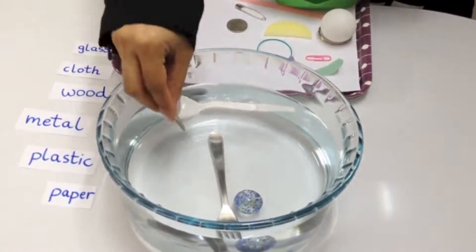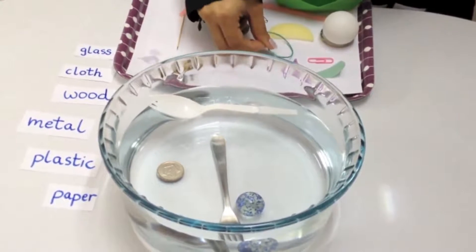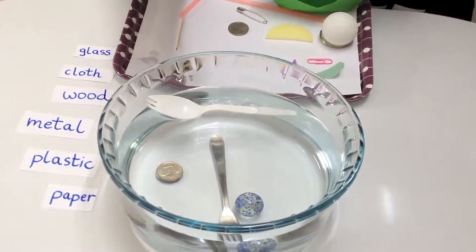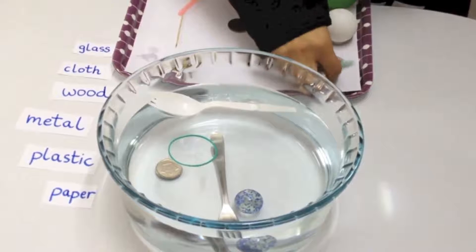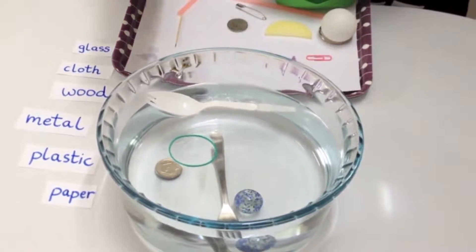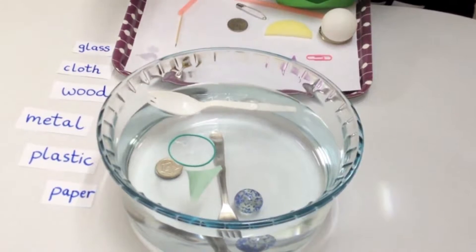I'm now going to put a coin. It's a metal coin, so it sinks. The next object is a rubber band which is made of rubber. It floats at the top. And next I'm going to put a piece of cloth which too floats at the top.